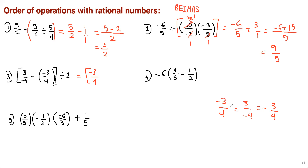Use either the form with negative on top or as a negative fraction out front. So here we have negative 3 over 4, and when you're subtracting and the two signs are the same, the sign becomes positive — so that becomes plus 3 over 4, divided by 2. Negative 3 over 4 plus 3 over 4 is 0, and 0 divided by 2 is 0. That's the answer for that one.